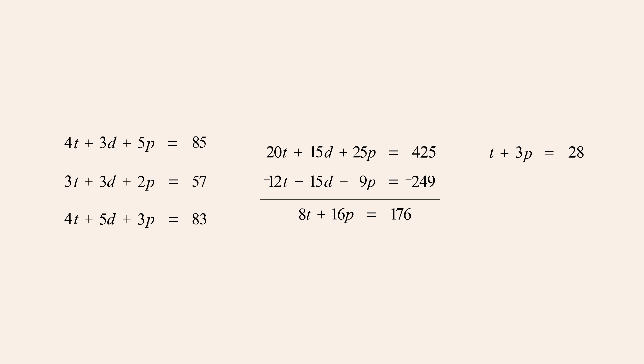This gives us 8t plus 16p equals 176, or dividing by 8, t plus 2p equals 22.